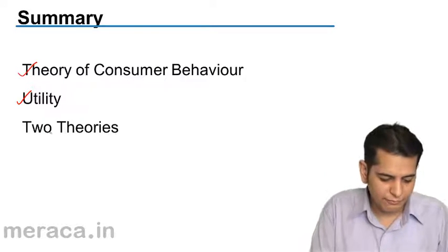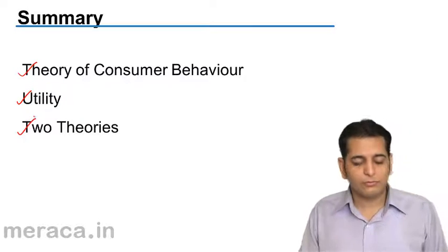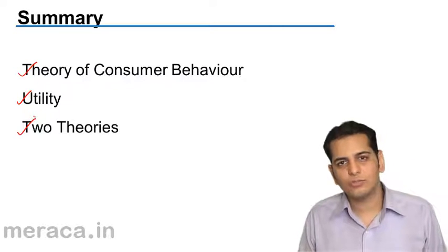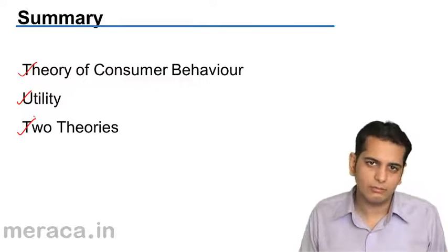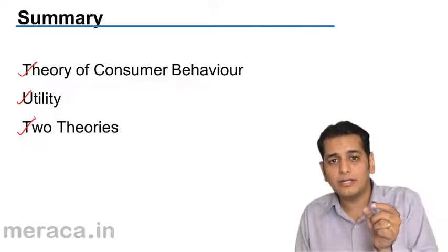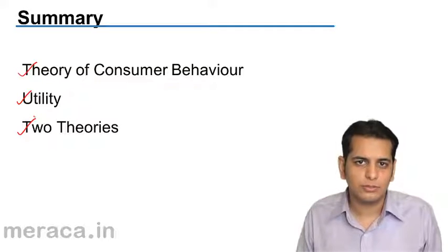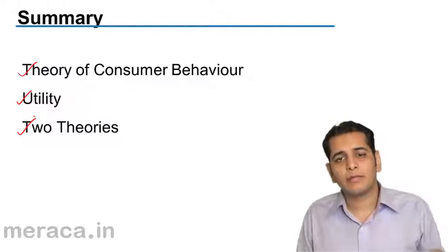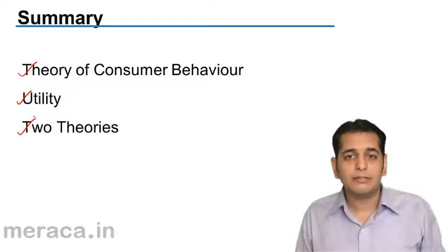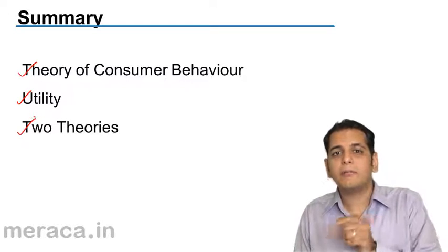Finally, we studied two schools of theory: first was cardinal and the other was ordinal. In cardinal, we tend to give a number to the utility derived with every consumption of the commodity.